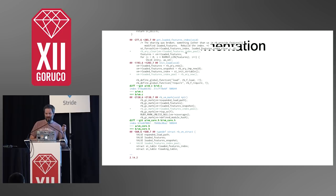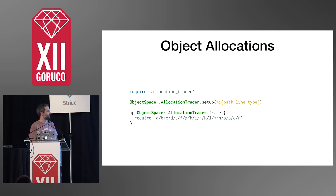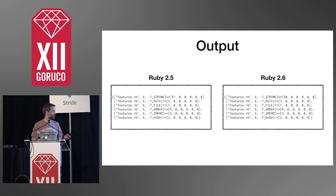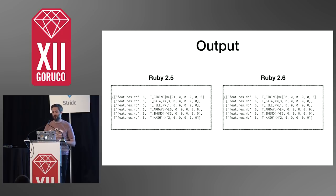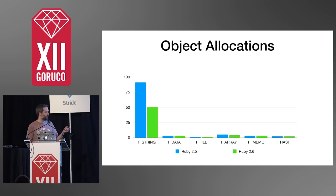Here is the implementation — this is the patch that I wrote. That is the entire thing. It's very simple. We can measure the impact by just requiring some files and checking how many objects they allocate. This is using the allocation tracer gem, and we can see how many objects doing a require allocates. Looking at the output, this is the output on Ruby 2.5 versus Ruby 2.6. The green bars are Ruby 2.6, the blue bars are Ruby 2.5, and you can see we've been able to reduce string allocation by about 50%.